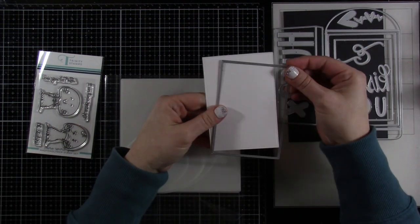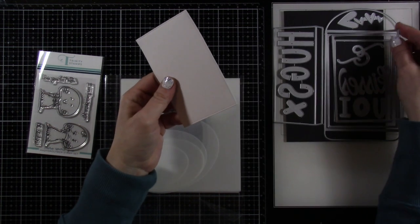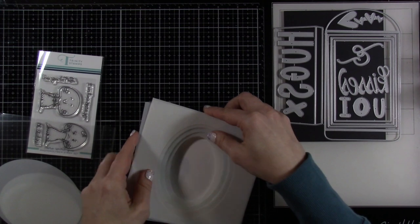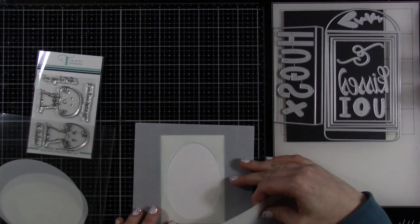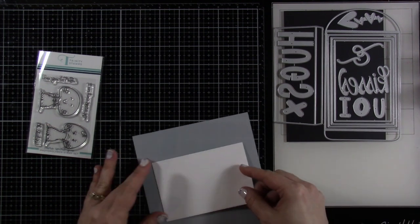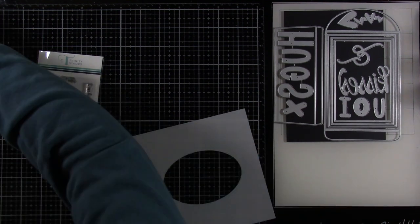I went ahead and cut down my panel out of some white cardstock using one of the dies from the Envelope Builder. And then I'm going to pull out one of our stencils and just line that up over the top. It's got four different ones with it and also has masks, so it's great for this.